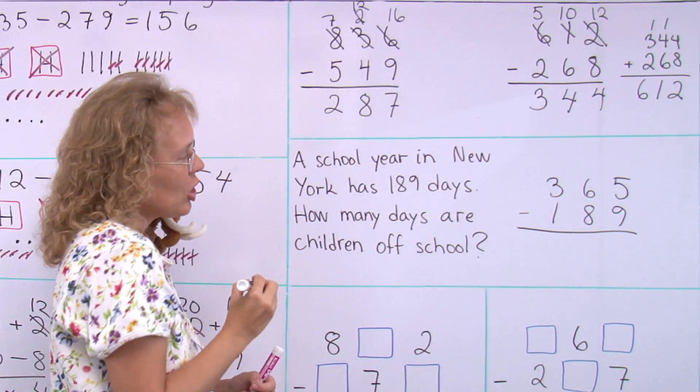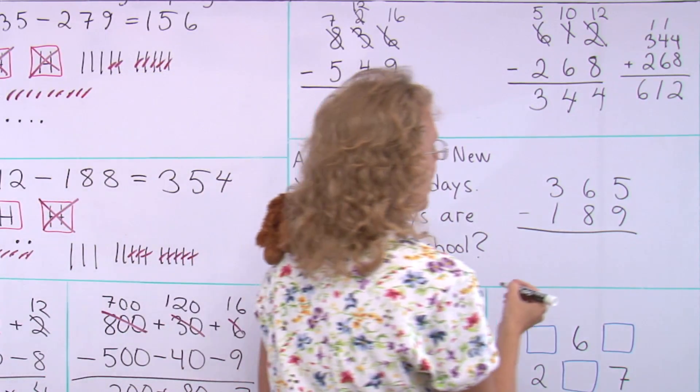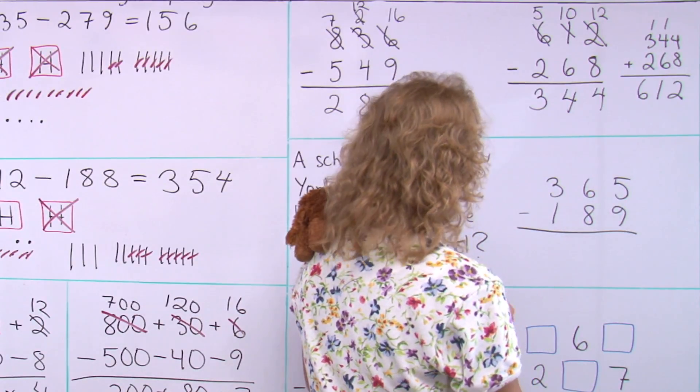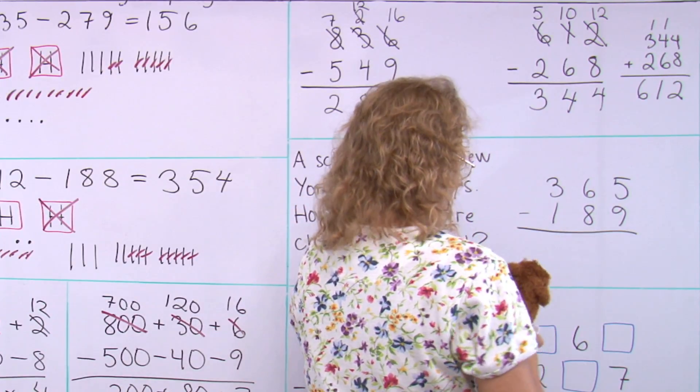And so, since they go to school for this many days, three hundred and sixty-five days in a year, we just simply subtract. Three hundred and sixty-five minus one hundred and eighty-nine. And then we'll get the days that they are not going to school. Five minus nine. Matthew, I'll let you do that.